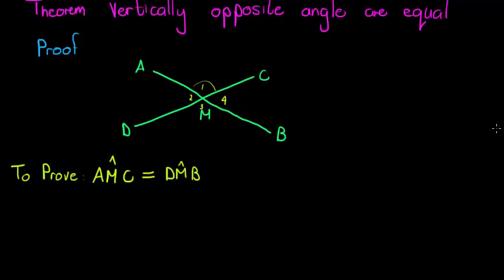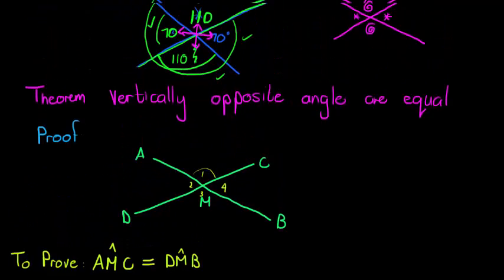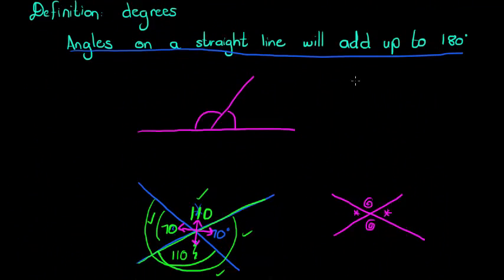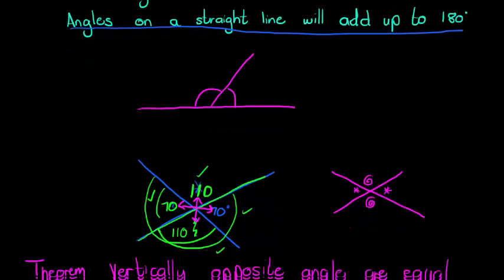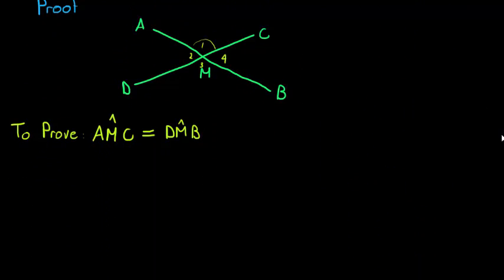Now sometimes I need to draw in a little construction, and then I would have a word here, construction, and I would write what I would construct. In this case, it's not necessary. The only thing I'm allowed to use in this proof is what I know already. The only thing I know so far is that angles on a straight line add up to 180. So let me show you how I'm going to do it.